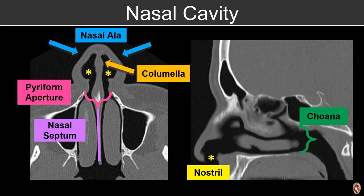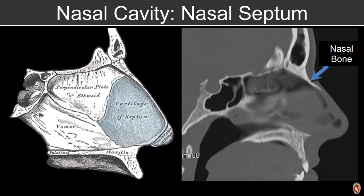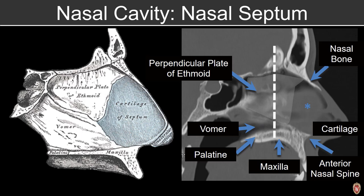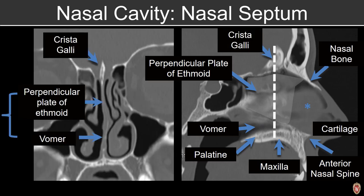The nasal septum is made up of cartilage anteriorly and bone posteriorly. The superior part of the osseous nasal septum is made up of the perpendicular plate of the ethmoid, and inferiorly we can see the vomer, which attaches to the hard palate. On a coronal view at the level of the crista galli, we can identify the nasal septum — the perpendicular plate of the ethmoid superiorly and the vomer inferiorly, with that superior configuration continuing as the crista galli.